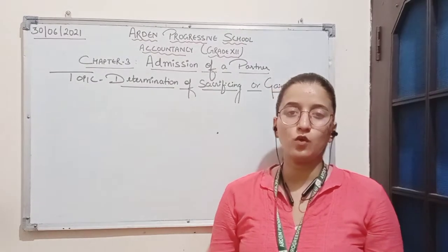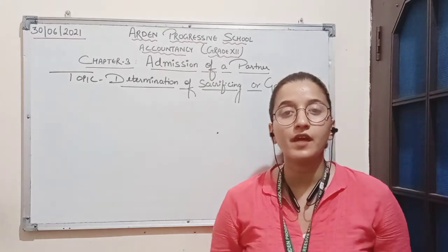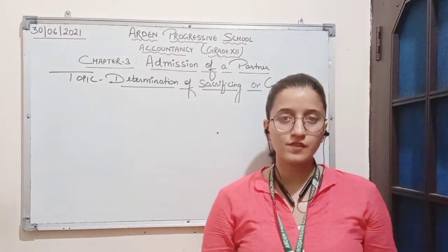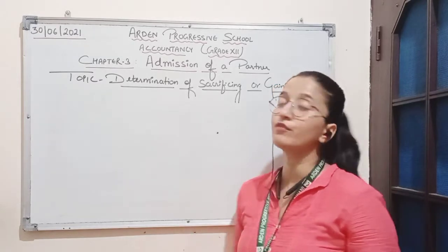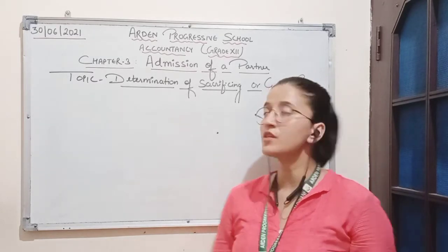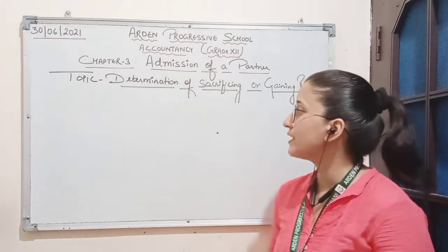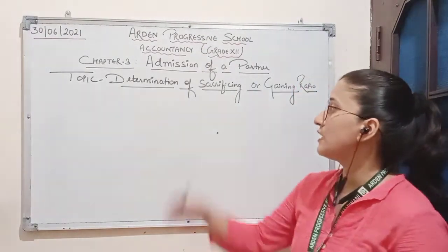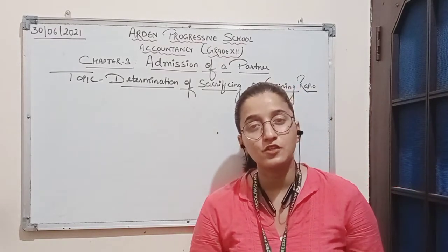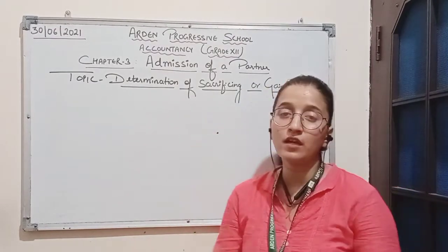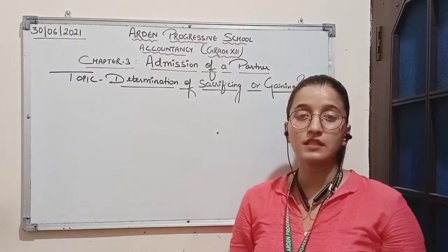Hello everyone, I hope you all are fit and fine at your places. I am Priyanka Vish from Arden Progressive School and in today's session we will be discussing about the topic of the third chapter of accountancy, which is admission of a partner. The topic for today's session is determination of sacrificing or gaining ratio. Before discussing this topic, we will do a quick revision of the topic discussed in the previous class.